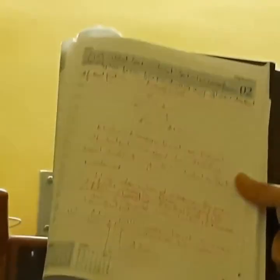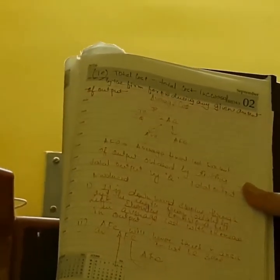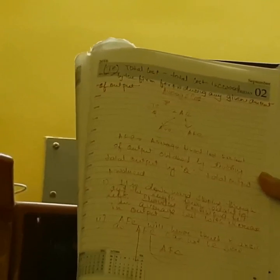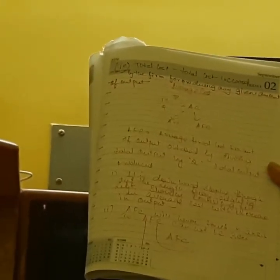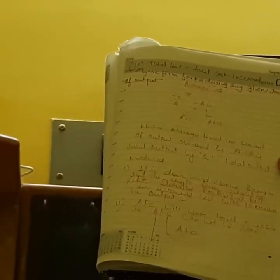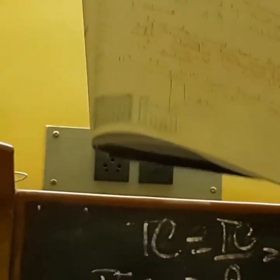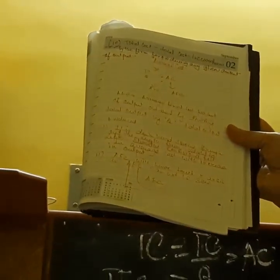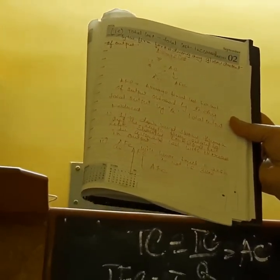The AFC curve cannot touch the x-axis because the total fixed cost cannot be zero. As total fixed cost cannot be zero, average fixed cost cannot be zero either — it will never ever touch the x-axis. So the name of the shape of the average fixed cost curve is rectangular hyperbola.